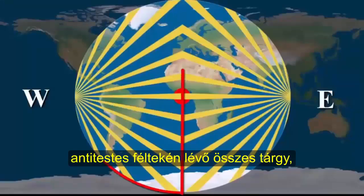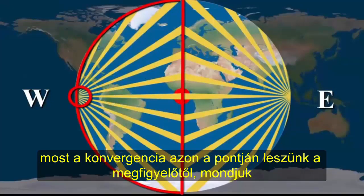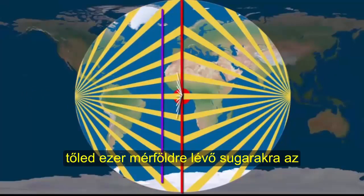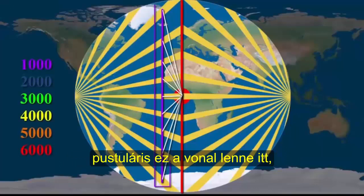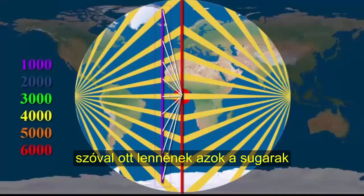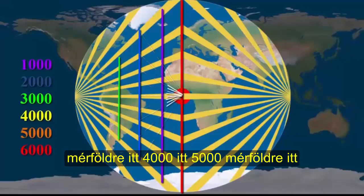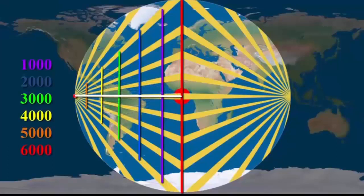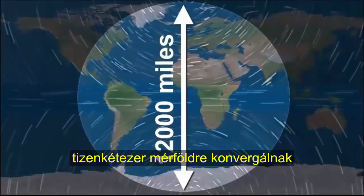All objects on your anti-crepuscular hemisphere — that 180-degree view — at 6,000 miles away from you, will be at that point of convergence. Breaking this down by distance: the anti-crepuscular rays at 1,000 miles from you are at this line; at 2,000 miles, here; 3,000 miles, here; 4,000, here; 5,000, here; and at 6,000 miles, they go to a point. The stars, like the sun rays, will converge 12,000 miles from the source.